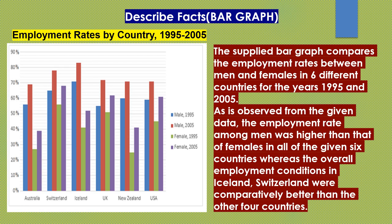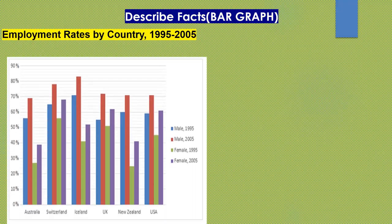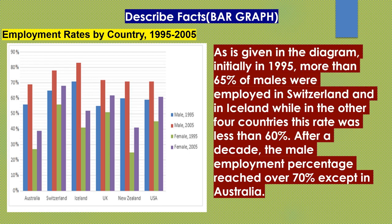As is observed from the given data, the employment rate among men was higher than that of females in all six countries, whereas the overall employment conditions in Iceland and Switzerland were comparatively better than the other four countries. As is given in the diagram, initially in 1995, more than 65 percent of males were employed in Switzerland and Iceland, while in the other four countries this rate was less than 60 percent.